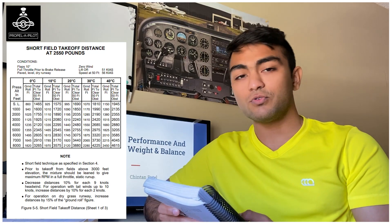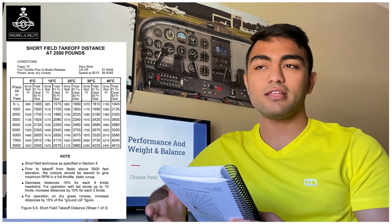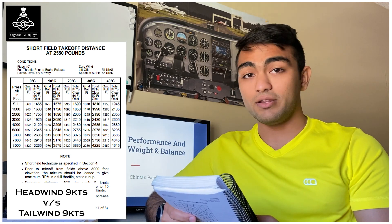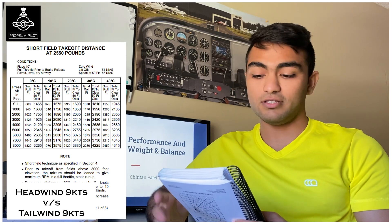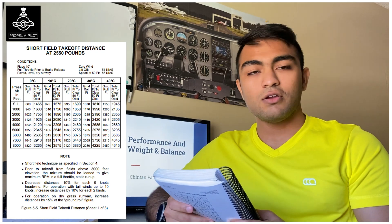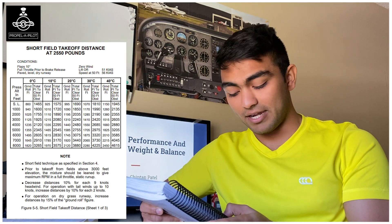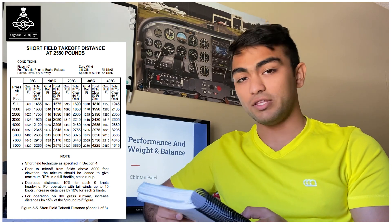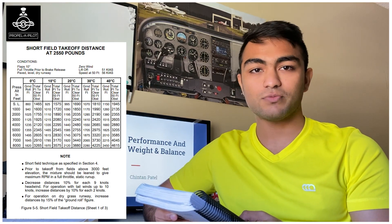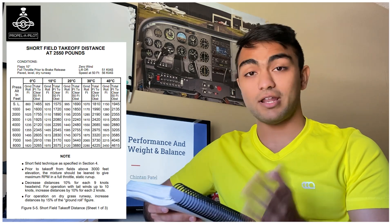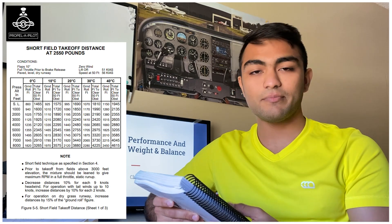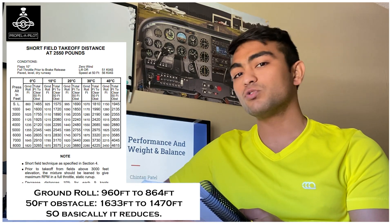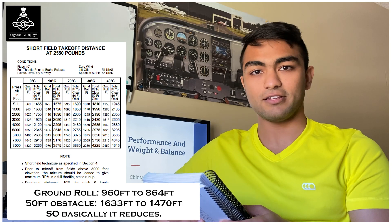To understand the effect of wind, let's assume a 9-knot headwind versus a 9-knot tailwind. It's very important to read the notes around the table. For winds, it says decrease 10% for each 9 knots of headwind — so our distances are reduced by 10% for a 9-knot headwind. That gives us reduced figures for both ground roll and total distance to clear a 50-foot obstacle.